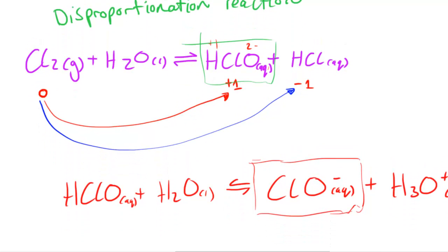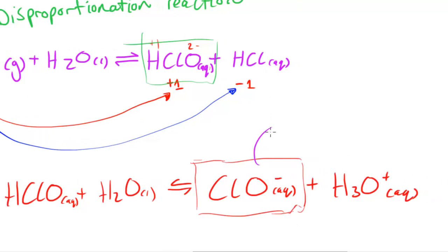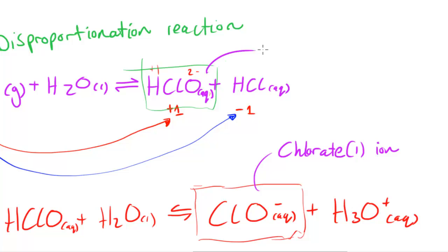Now let's take a look at the names of these compounds produced. This here is going to be a chlorate ion, and we need to indicate the oxidation number of the chlorine, so it's chlorate(I) ion. That can kill the bacteria.